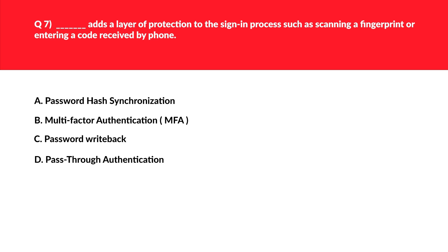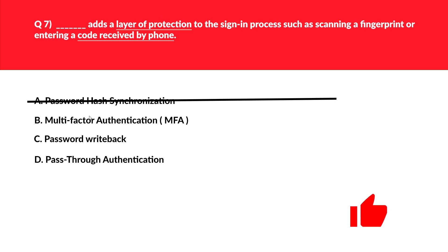This question is about adding an extra layer of protection or security. Option A, Password Hash Synchronization, synchronizes the hash of a user's Azure AD and on-premises Active Directory passwords — this is more related to synchronization, not an extra security layer, so we'll reject this. Option B, MFA, adds an extra layer of security like biometrics — face ID, fingerprinting, or text messages received on the phone — we'll keep this. Option C, Password Writeback, allows password changes on the cloud to be written to on-premises Active Directory — the question is about the sign-in process, not changing passwords, so we'll reject this.